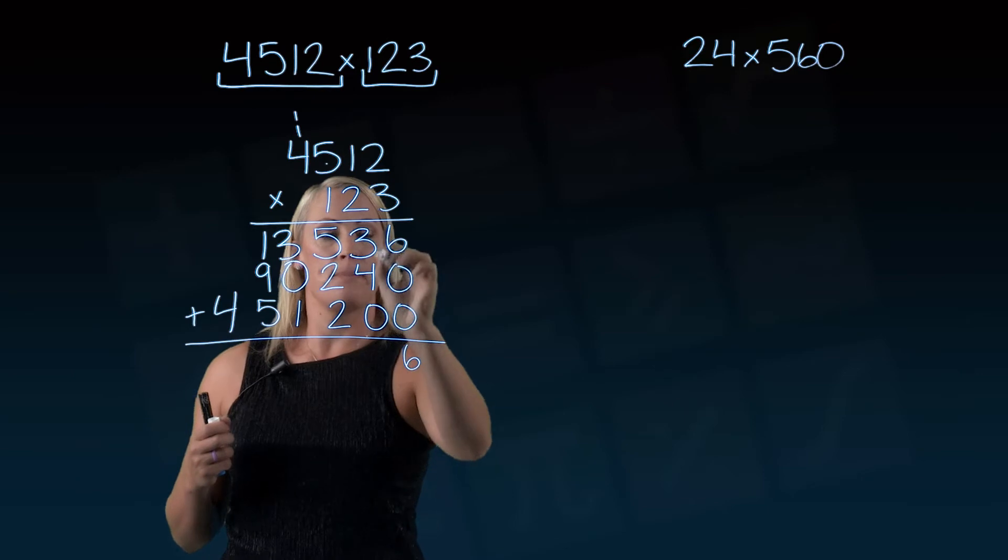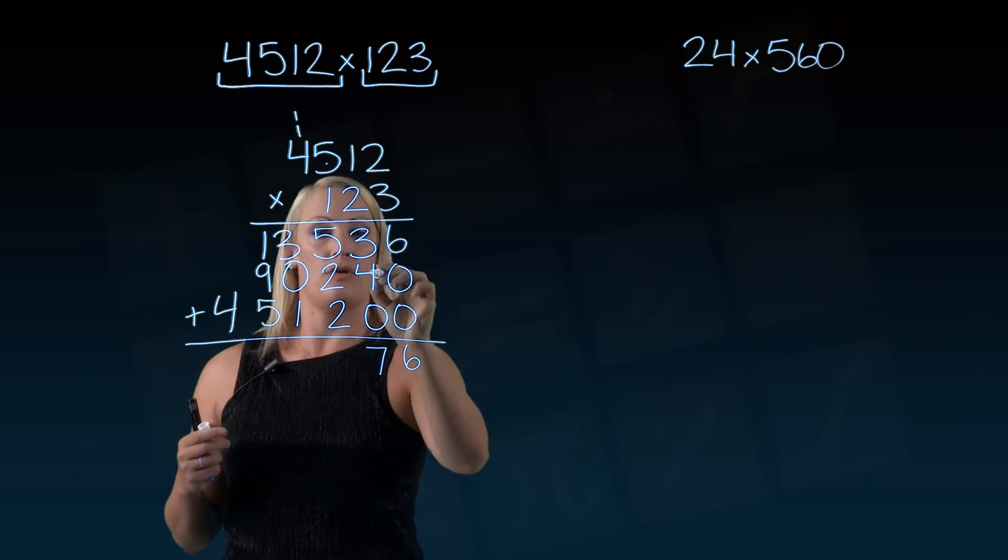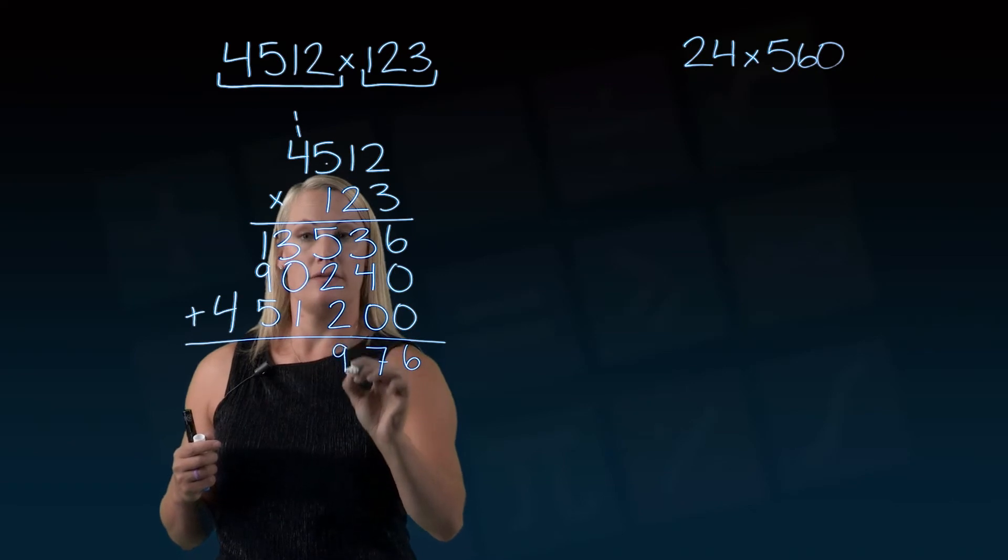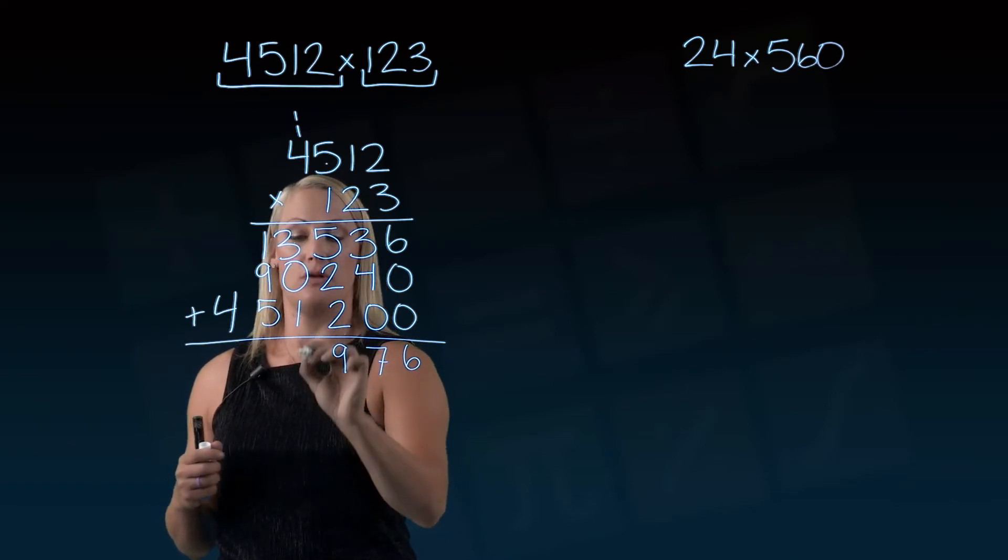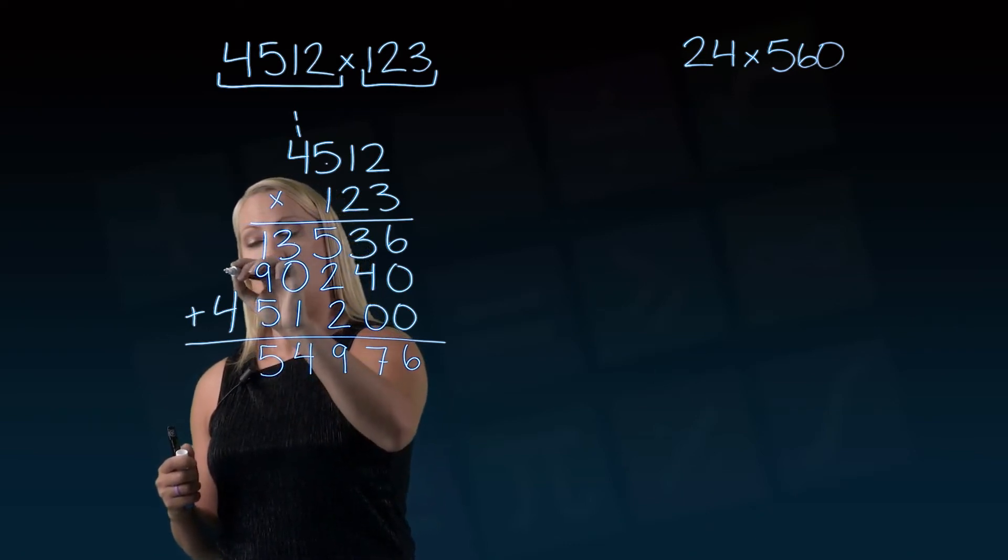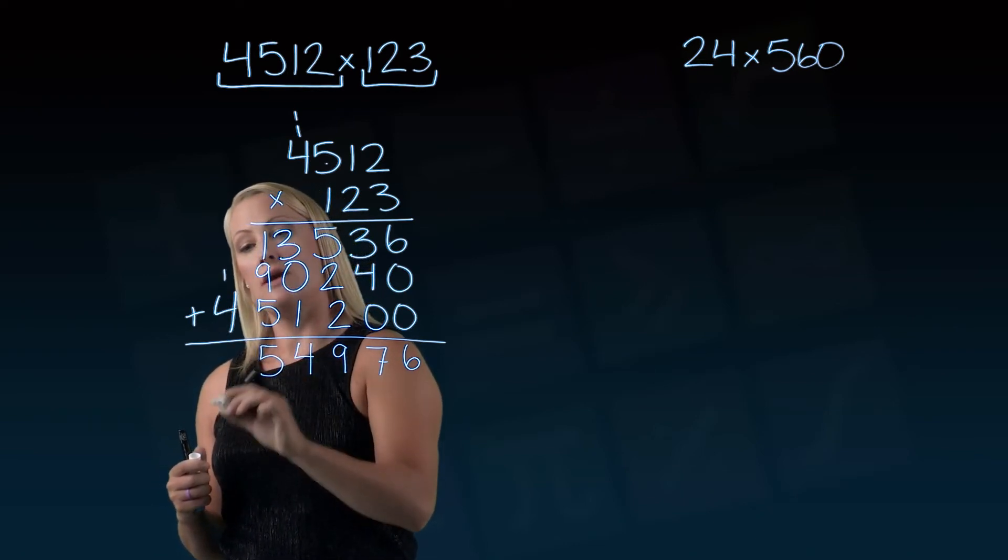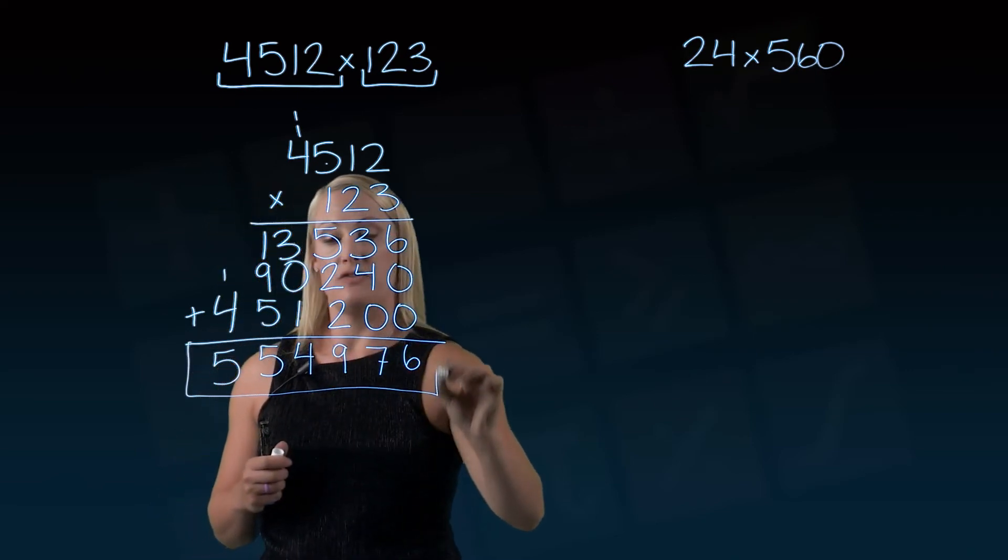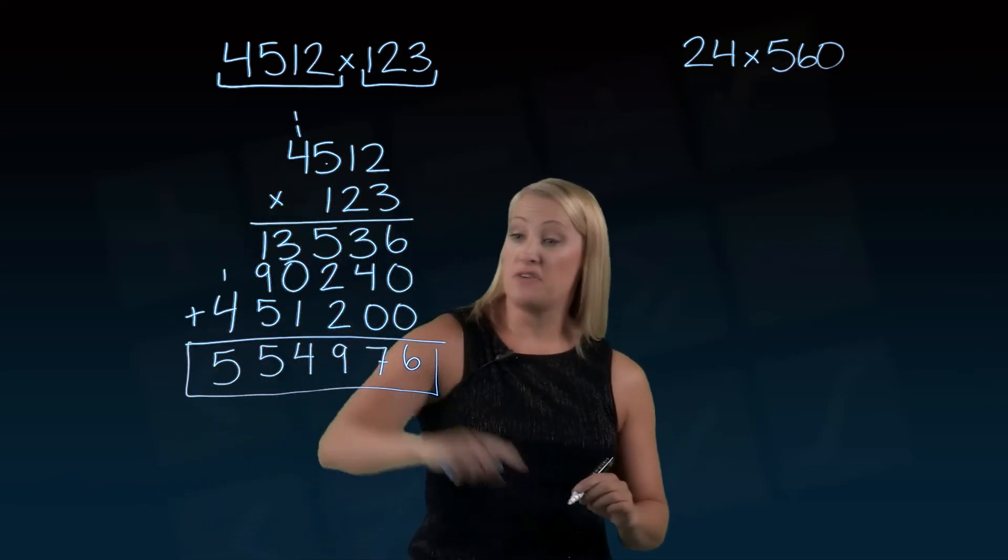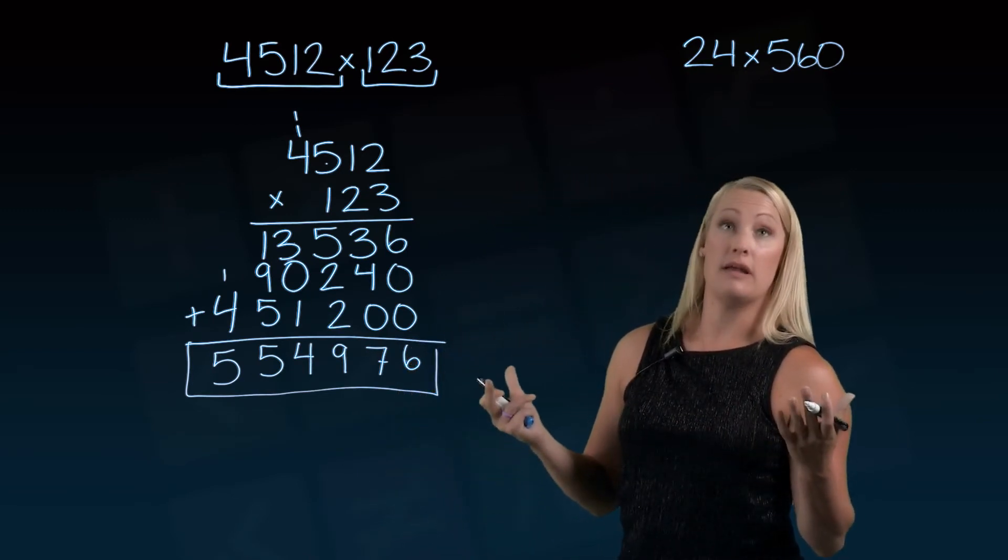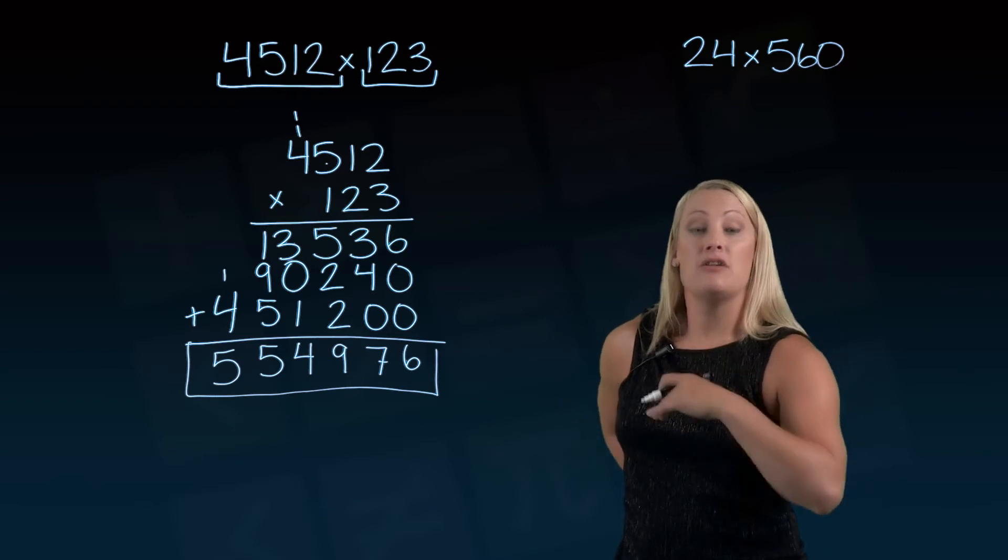So we've got 6. 3 plus 4 plus 0 is 7. That's 9. 3 plus 0 plus 1, that's 4. That's 15, so I'm going to bring that last 1 over. 4 plus 1 is 5. So we have a final answer of 554,976 without our calculator, which is kind of nice. Let's take a look at one more example.